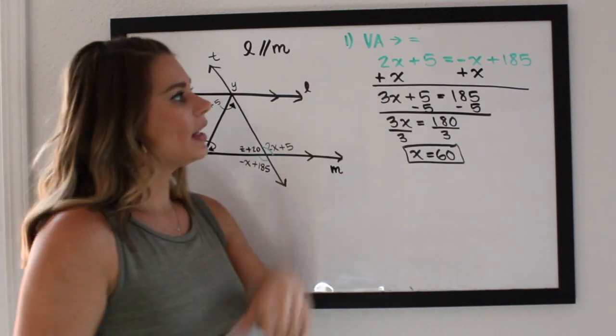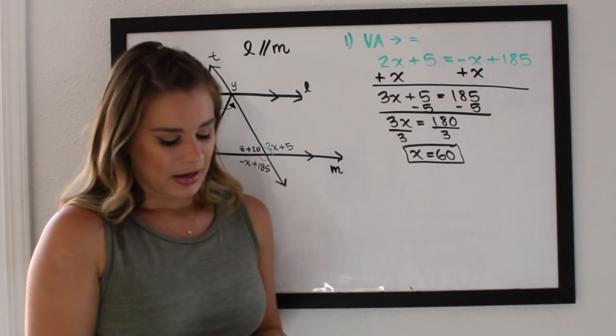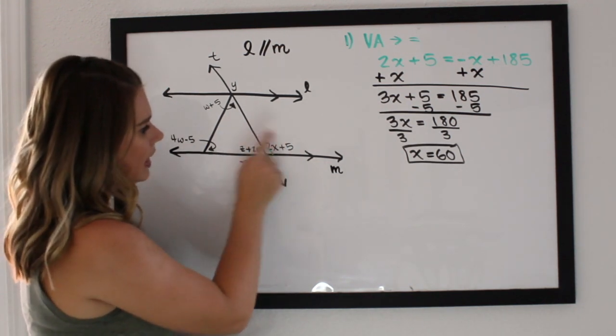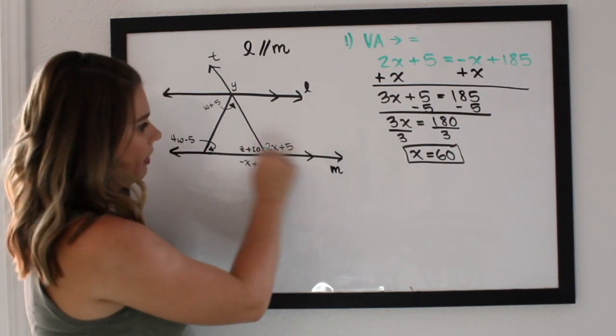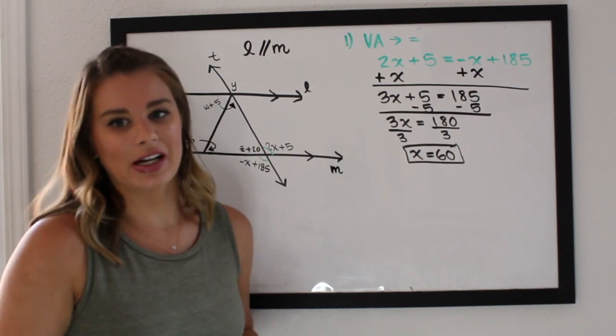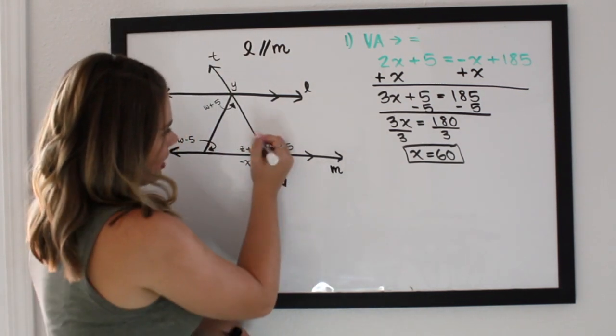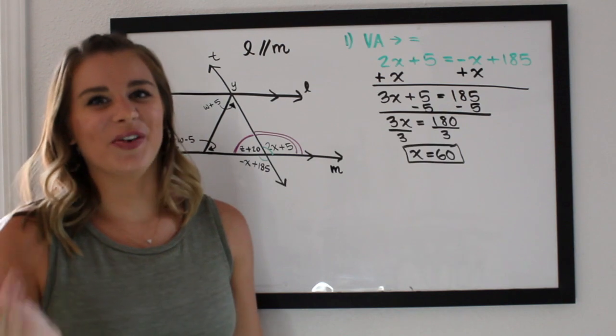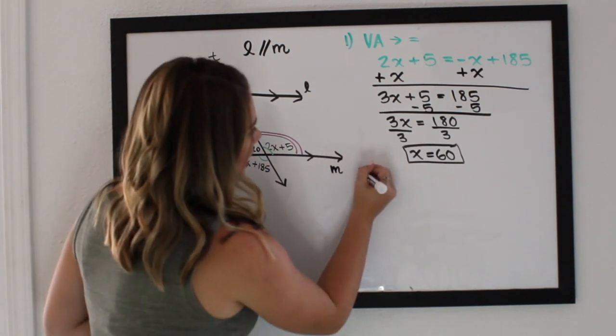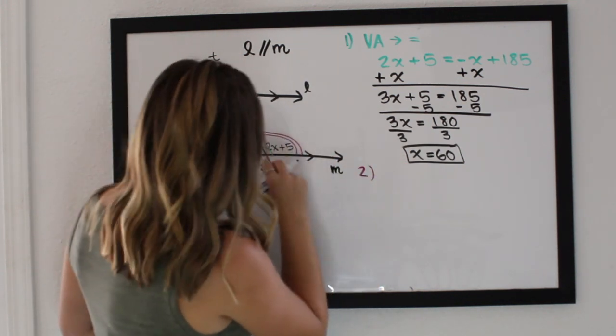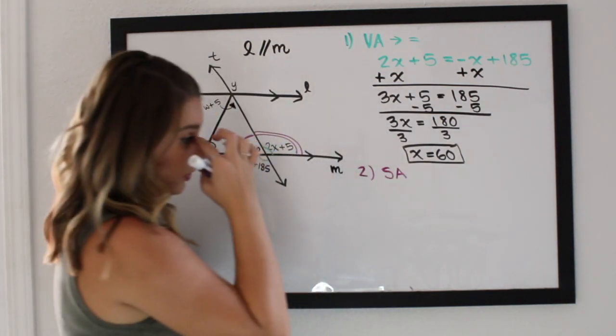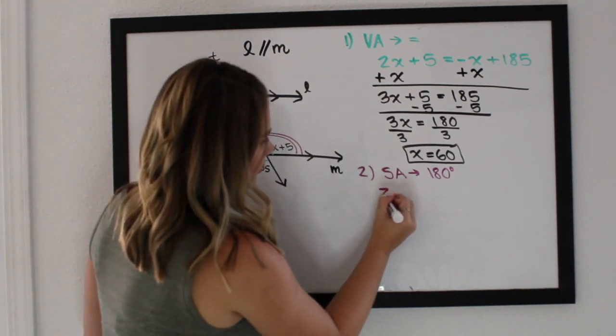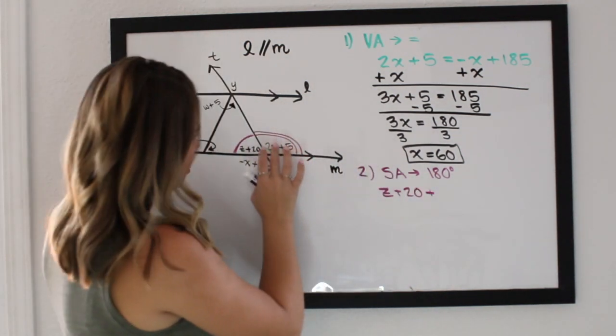So step 1, identify your theorem that you're using. Step 2, set up your equation. And then step 3, solve. The next thing that I'm looking at is I see in this 2x plus 5 and z plus 20, these angles right here, those angles are actually supplementary. They form a line, in other words they're going to add up to 180 degrees. So I'm going to use that fact to set up my next equation. My second equation, we're going to use the fact that supplementary angles add up to 180 degrees. So that means that z plus 20 plus 2x plus 5 equals 180 degrees.